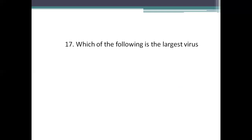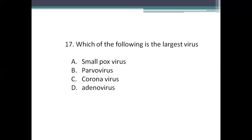Next question: which of the following is the largest virus? Option A: smallpox virus. Option B: parvovirus. Option C: coronavirus. Option D: adenovirus. The right answer is Option A, smallpox virus — the largest virus with a size of 300 nanometers. Parvovirus is the smallest virus at 20 nanometers. Viral size is always measured in nanometers.